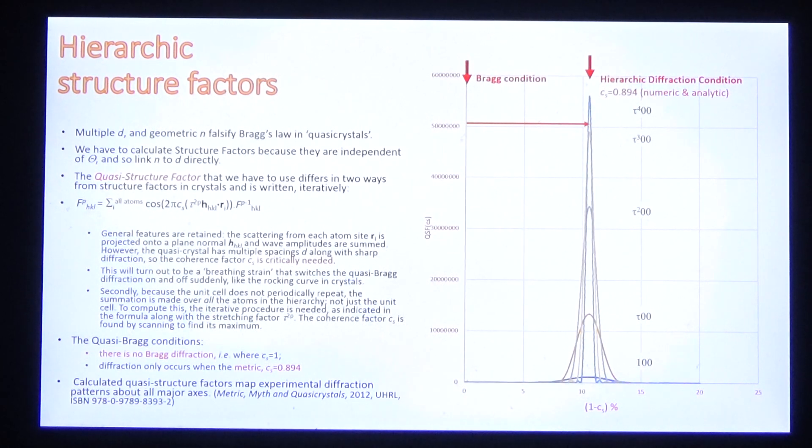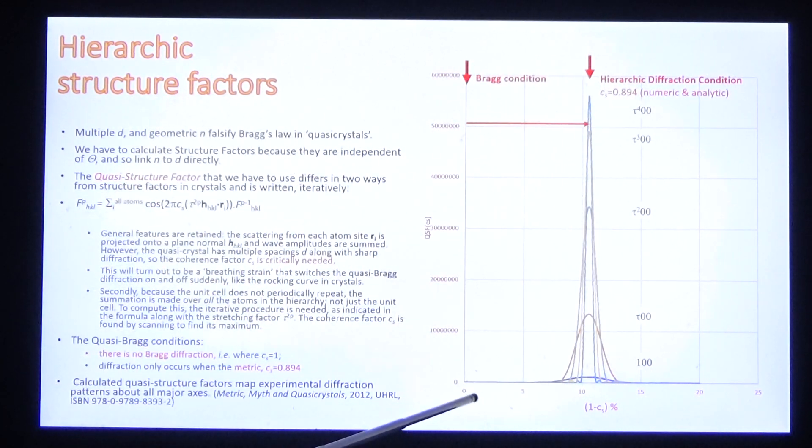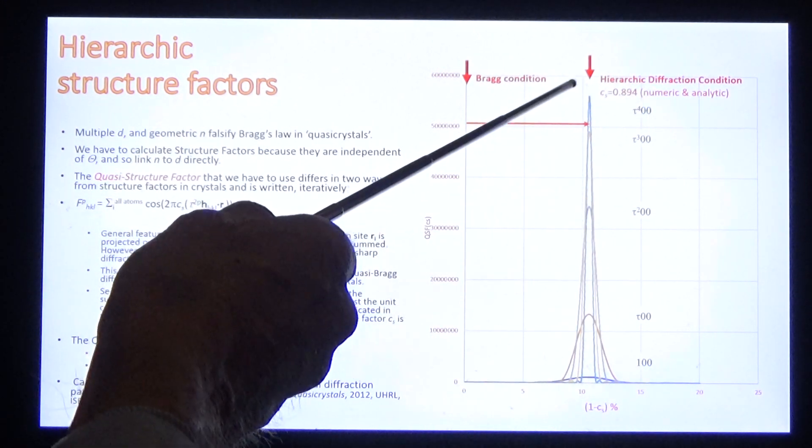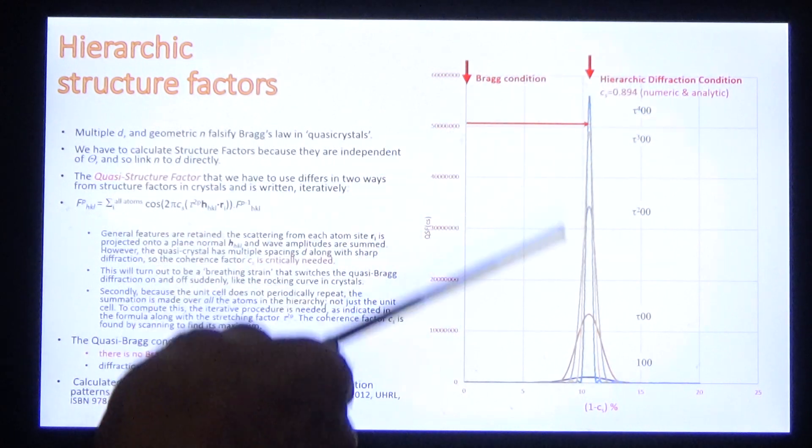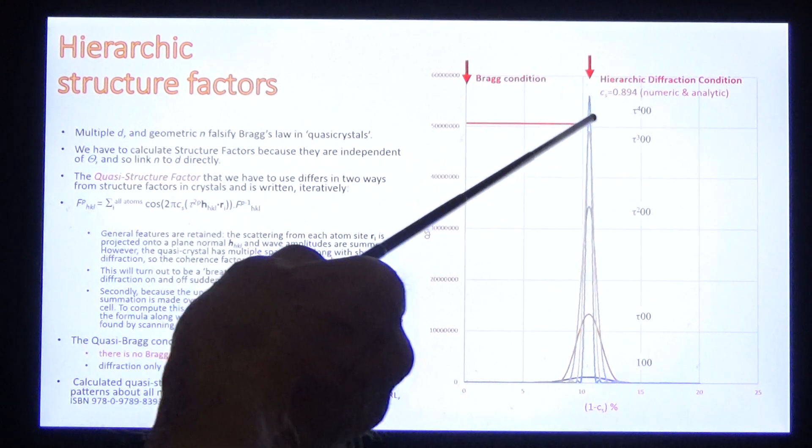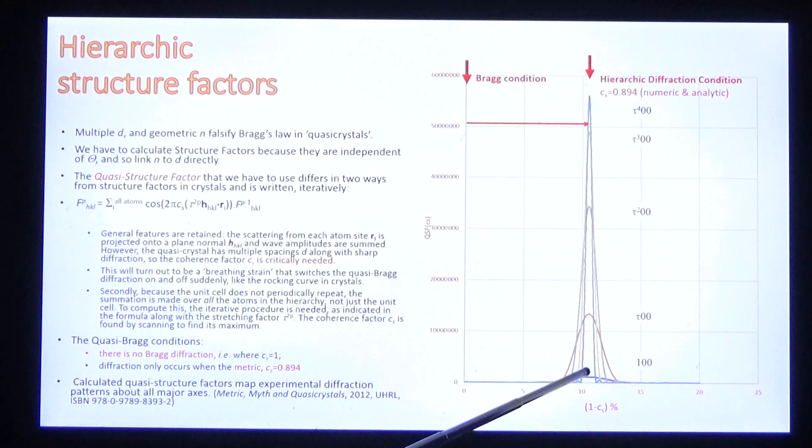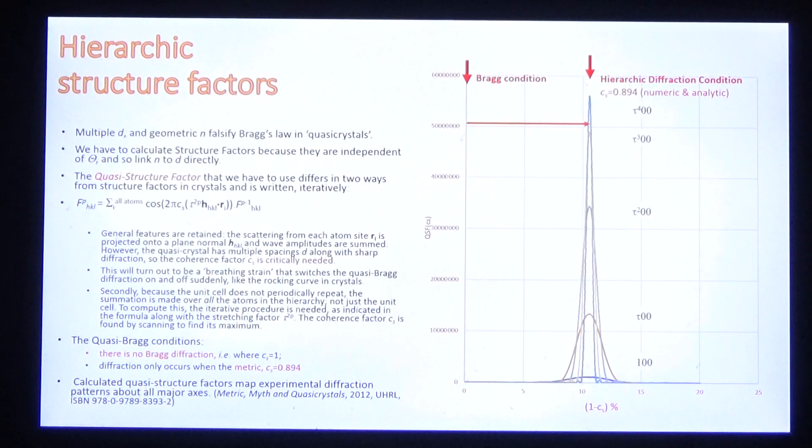And what is the outcome? The outcome is there is no Bragg diffraction. If there were Bragg diffraction, it would occur on the axis, where Cs equals 1. But instead, when we scan Cs, we find that the diffraction occurs at the hierarchy diffraction condition, where the metric displaces the diffraction from the Bragg condition by over 10%. This quasi-Bragg condition is the same for all the beams in the original data.